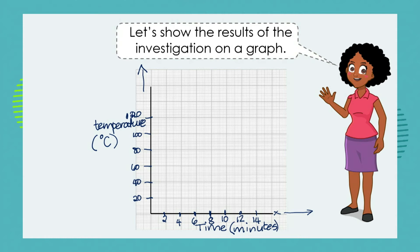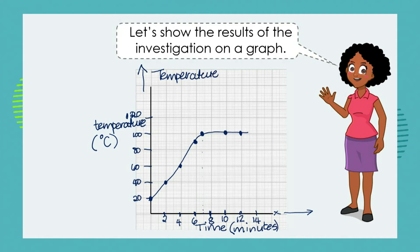At the start, our water was maybe 20 degrees coming out of the tap. After two minutes, the thermometer registered about 40 degrees. After four minutes it was up to 60 degrees. At six minutes it had shot up to 90 degrees. Somewhere between six and eight minutes it reached 100 degrees. At 10 minutes it was still 100 degrees, and at 12 minutes it was still 100 degrees.